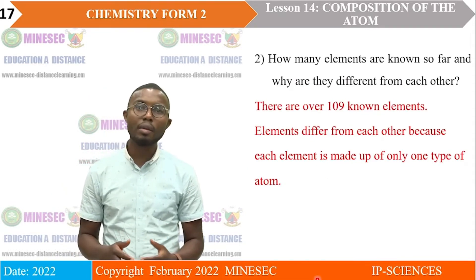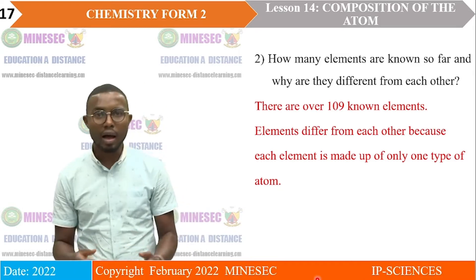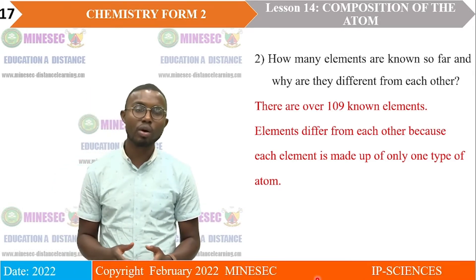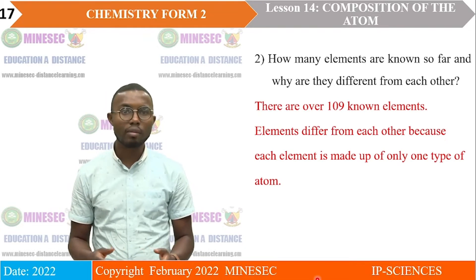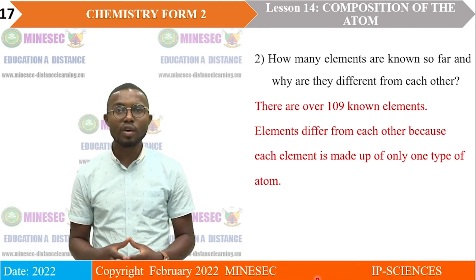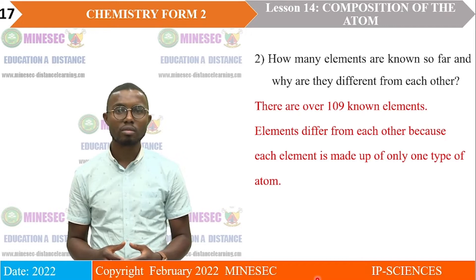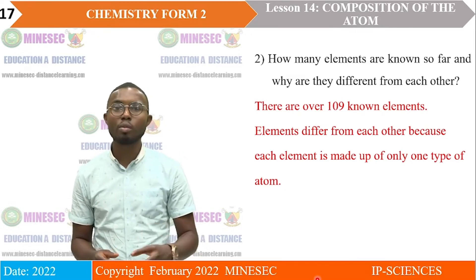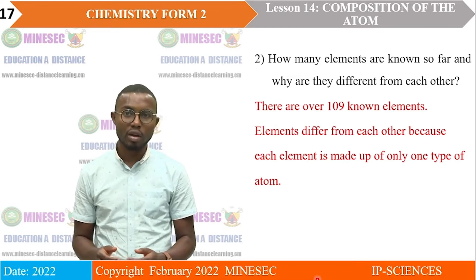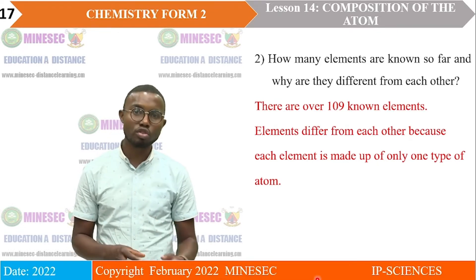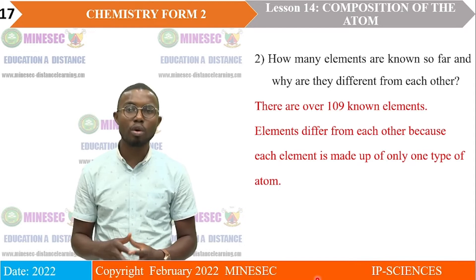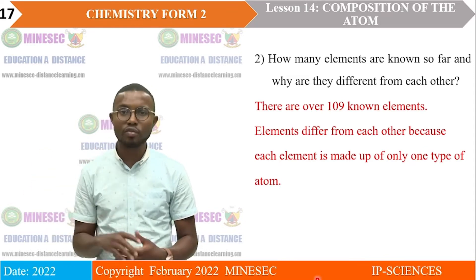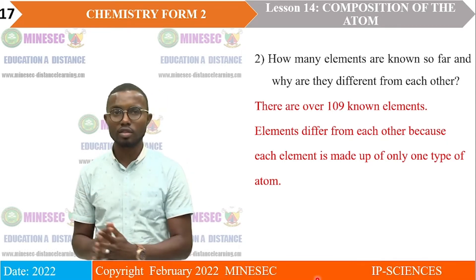How many elements are known so far? There are 109 naturally occurring known elements. Elements differ from each other because each element is made up of only one type of atom. The atoms of sodium are not the same as the atoms of potassium, and the atoms of potassium are also different from the atoms of calcium.